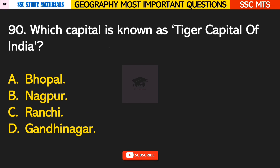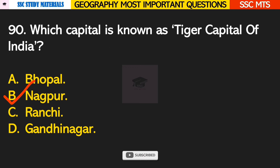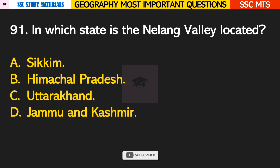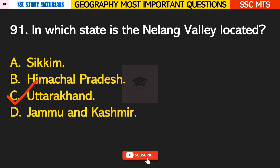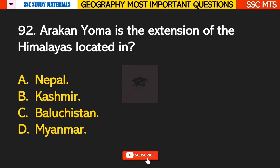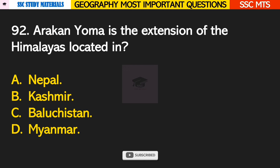Question number 90: which city is known as the Tiger Capital of India? Answer B — Nagpur. Question number 91: in which state is the Nilang Valley located? Answer C — it is located in Uttarakhand. Question number 92: Arakan Yoma is the extension of the Himalayas located in? Answer D — it is located in Myanmar.